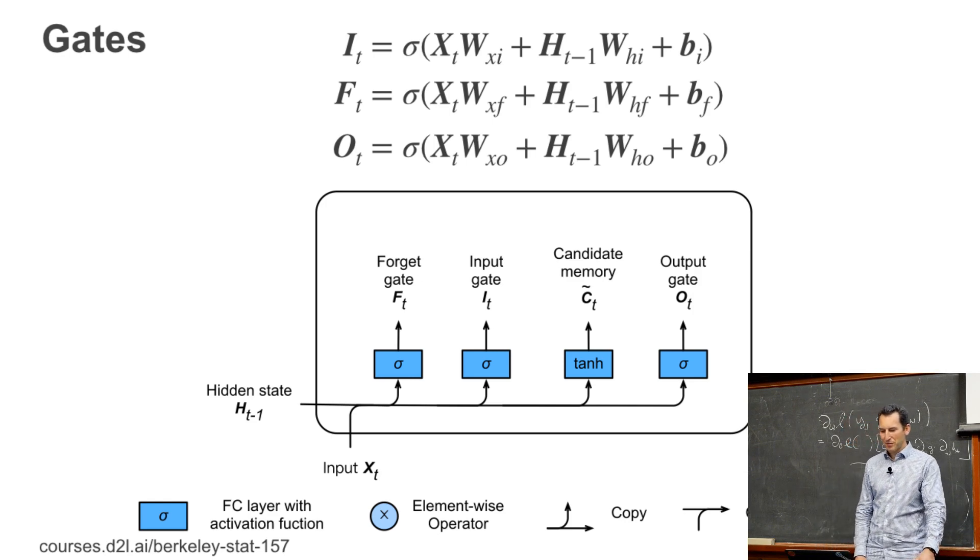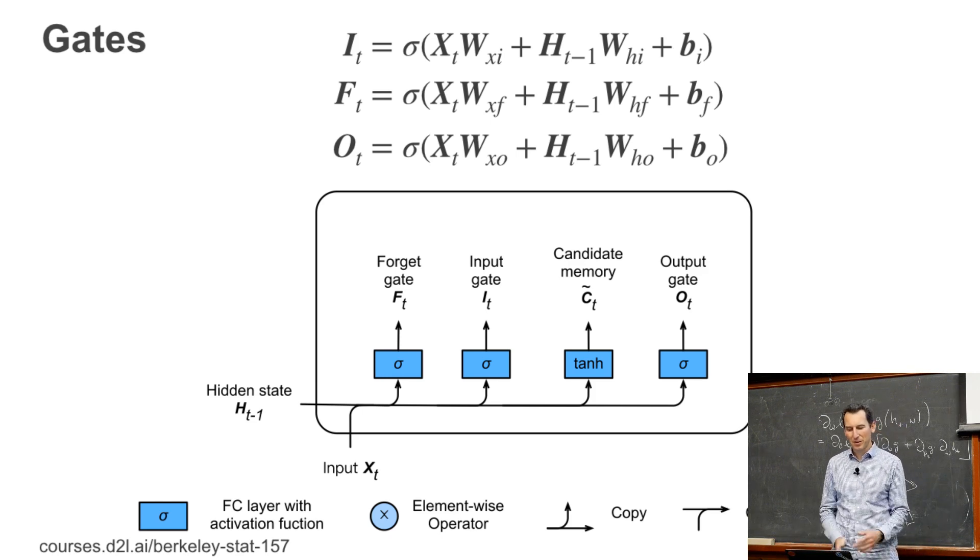So the first thing we have to do is we need to design gates. And those gating functions are exactly the same as before. We have I, F, and O. And they are just sigmoid of some linear function of input and hidden state and then some bias. So far this looks pretty much the same as before, just that we have three. Before that we had two. And with three you can do more than with two.